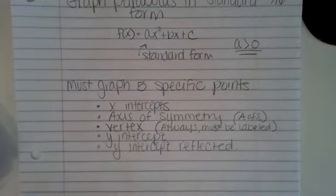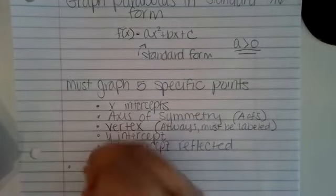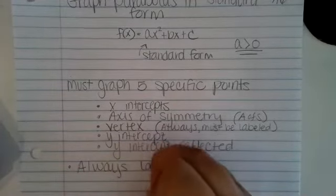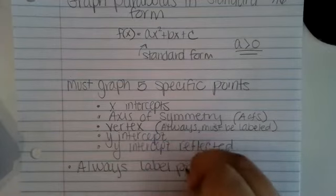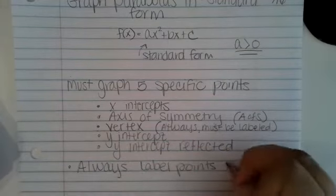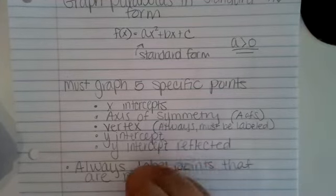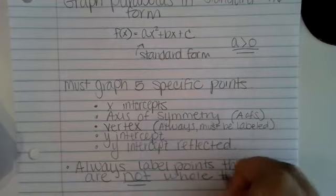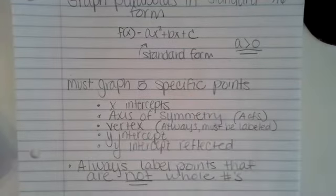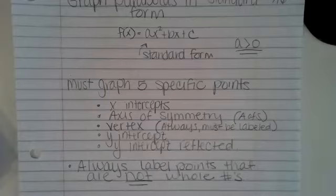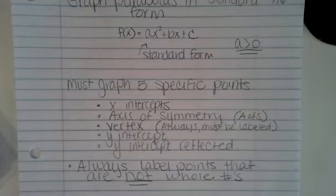One other key takeaway is that we must always label points if they are not whole numbers. If our points are not whole numbers, we need to make sure to label those points so we can identify them. These are the key ground rules to graphing parabolas.